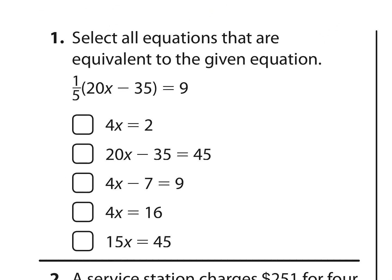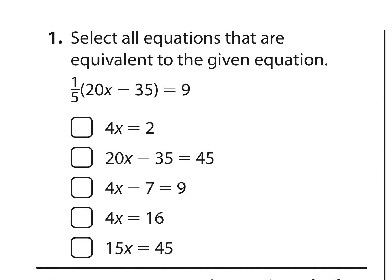Looking at number one, select all equations that are equivalent to the given equation. So we got a couple ways we could do this. One is we could solve every one of these equations and find out which ones are the same. I'm going to go ahead and start by solving this equation: one-fifth times 20x minus 35 equals 9.